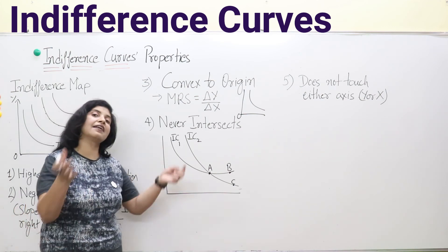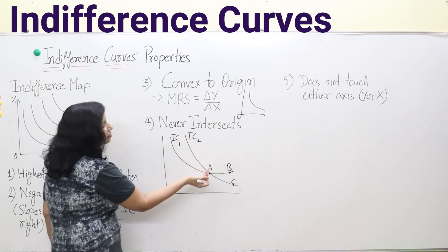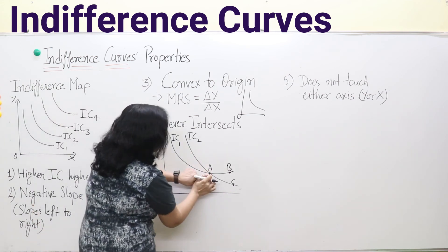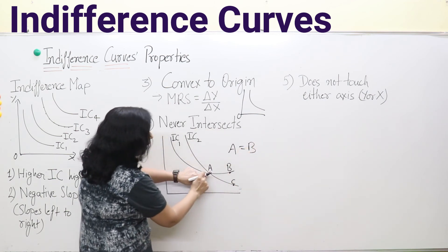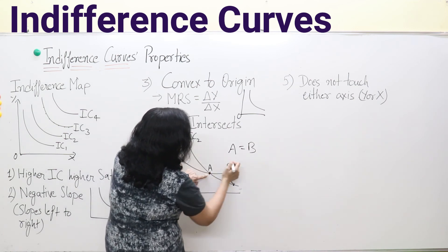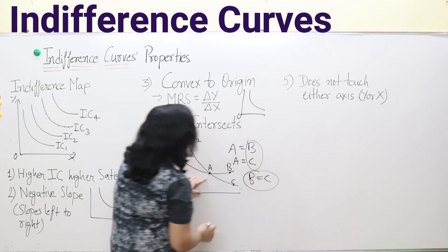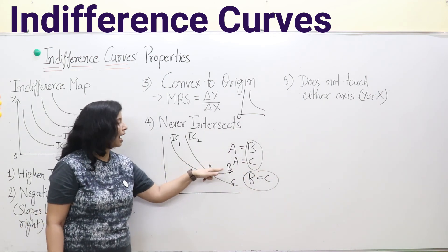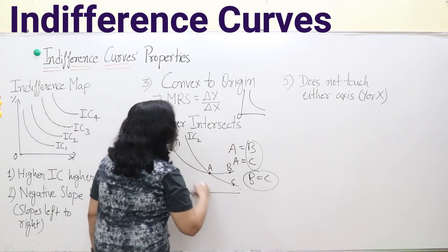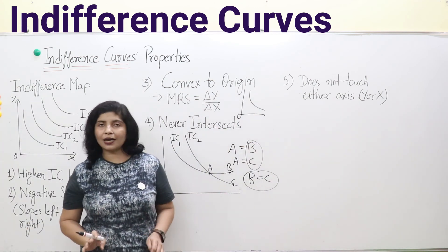The fourth property is that two indifference curves never intersect each other. Suppose IC1 and IC2 intersect at point A. Then point A equals B (both on IC1) and A equals C (both on IC2). By transitivity, B equals C. But B is on the lower IC1 and C is on the higher IC2, so they cannot give the same satisfaction — a contradiction. Therefore, indifference curves cannot intersect.